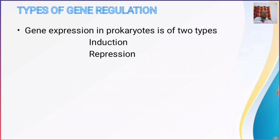Gene expression is of two types in prokaryotes: induction and repression. In the case of induction, the gene expression is turned on, whereas in the case of repression, the gene expression is turned off, depending upon the situation.